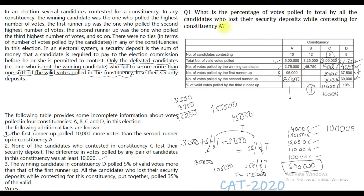Question 1: What is the percentage of votes polled in total by all the candidates who lost their security deposit while contesting for constituency A? In constituency A, only three people managed to get more than one-sixth of the votes, and they got 4,55,000 together. That means the remaining seven people got only 45,000 votes out of the total 5,00,000. So 45,000 is 9% of 5,00,000, and the answer is 9%.